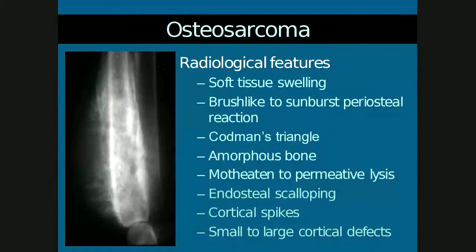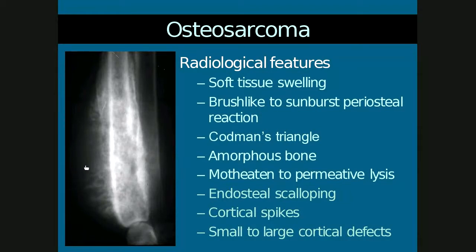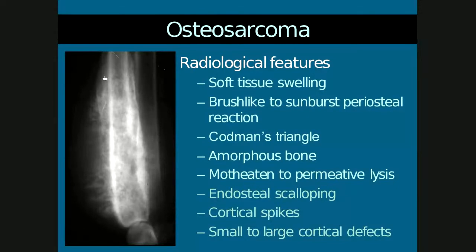The typical features of osteosarcoma are all aggressive. Recalling the initial lectures on radiological interpretation, several things indicate a lesion is aggressive. There's often soft tissue swelling present. There are brush-like to sunburst periosteal reactions, which lie on the more aggressive spectrum. Codman's triangle is the more solid periosteal reaction that occurs on the diaphyseal side of the lesion and appears more benign. There can be amorphous bone, which is speckled and speculated new bone within the soft tissue not associated with the cortex. Lysis is typically moth-eaten to permeative, both of which are aggressive.